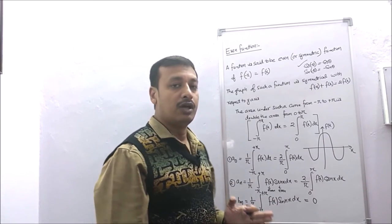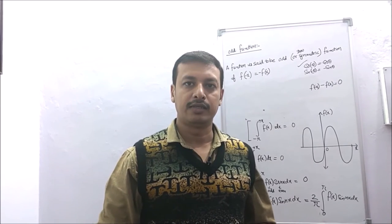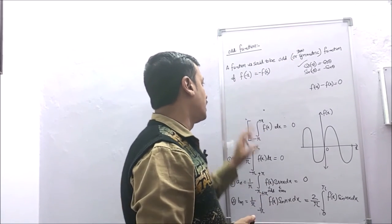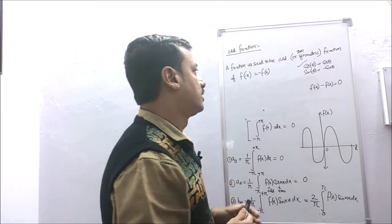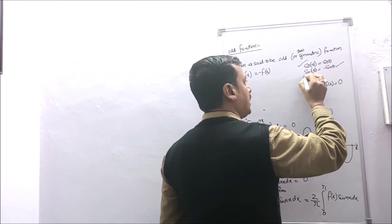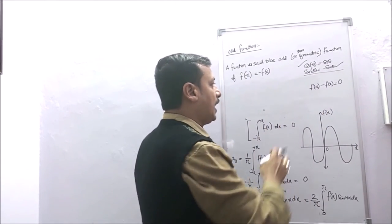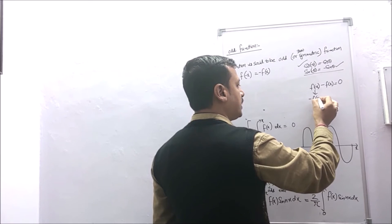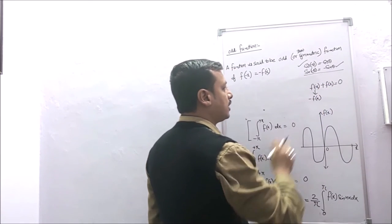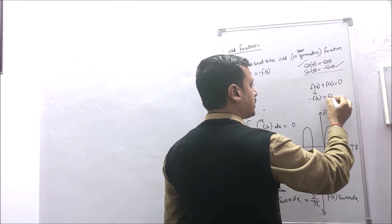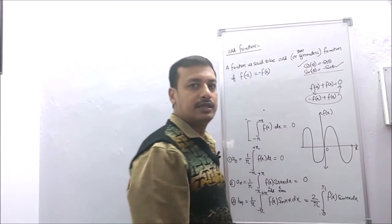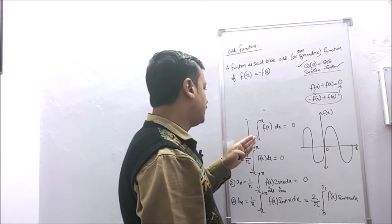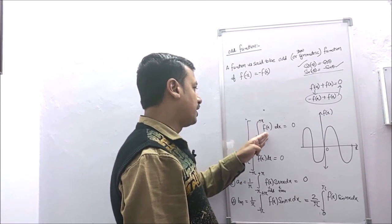A function is said to be odd, or skew-symmetric, if f(−x) = −f(x). For example, sin(−θ) = −sin(θ), so sine is an odd function. Also, f(−x) + f(x) = 0 for an odd function. The graph of an odd function differs from an even function, and the area ∫ from −π to +π f(x) dx = 0.